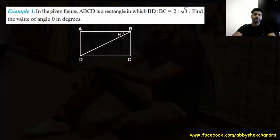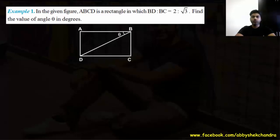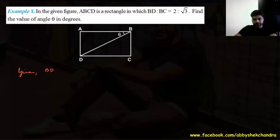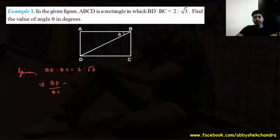This brings us to the questions. Question 1: in the given figure, ABCD is a rectangle in which BD to BC is 2 to root 3. Find the value of angle theta in degrees. What is given: BD by BC equals 2 by root 3.